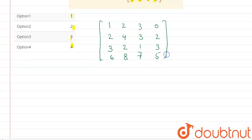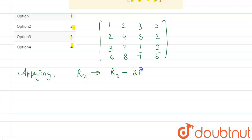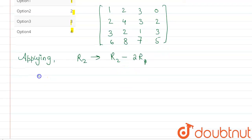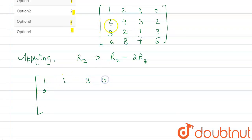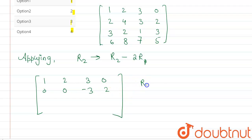Applying row operation R2 → R2 - 2R1: we multiply row 1 by 2 and subtract from row 2. Row 1 stays as [1, 2, 3, 0]. For row 2: 2-2=0, 4-4=0, 3-6= -3, 2-0=2. So row 2 becomes [0, 0, -3, 2].